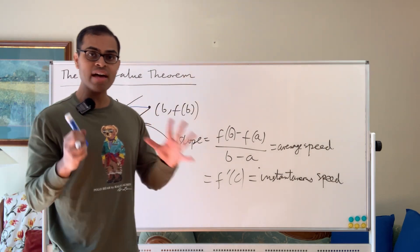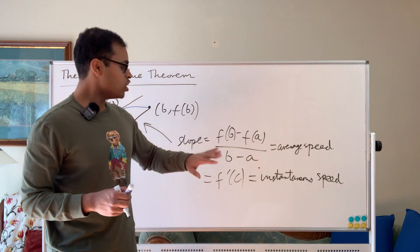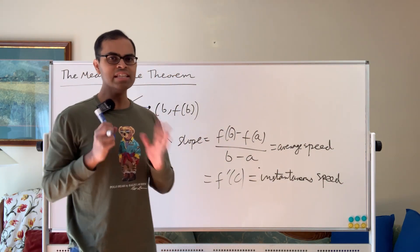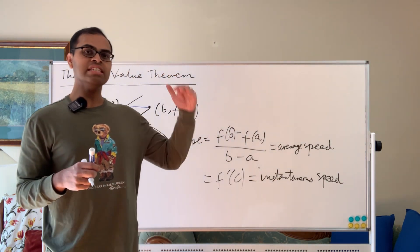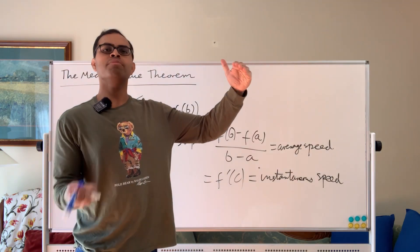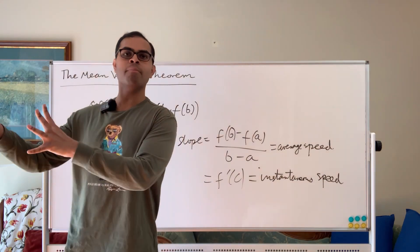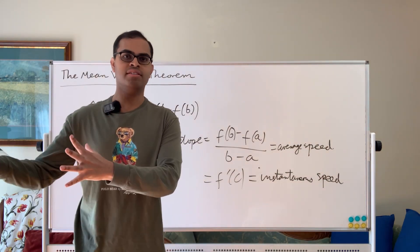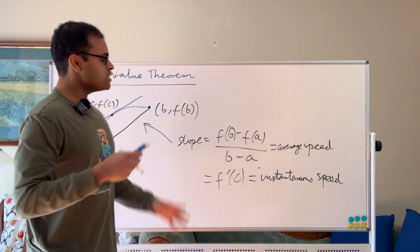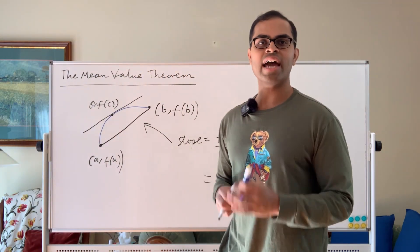The mean value theorem states that at some point in the interval, your instantaneous speed is going to match up with your average speed. And this makes sense, because if your instantaneous speed were always above your average speed, your average wouldn't be your average anymore — it would have to be much higher. An average of a bunch of numbers that are all greater than zero has to be greater than zero. So sometimes it's higher, sometimes it's lower. That's basically what the mean value theorem is stating in physical language.